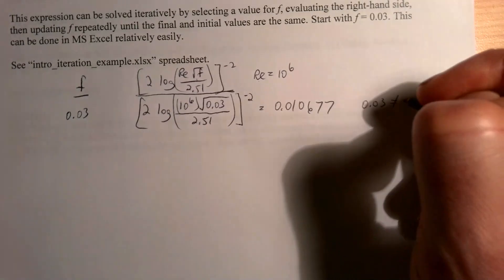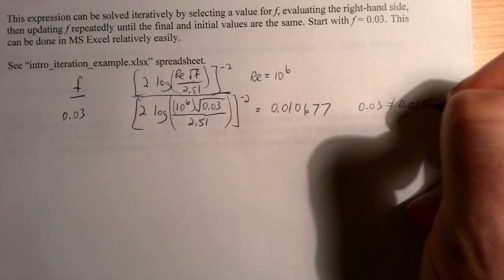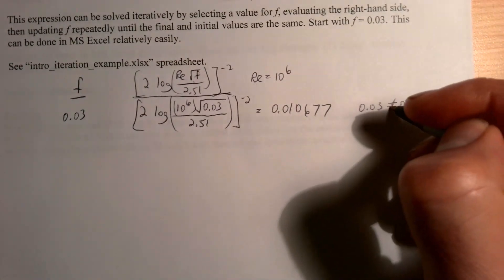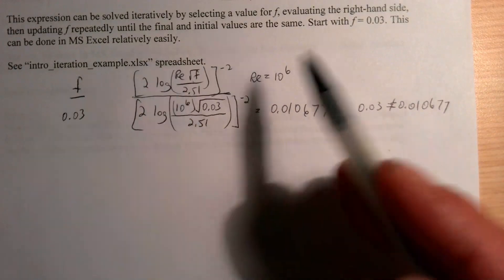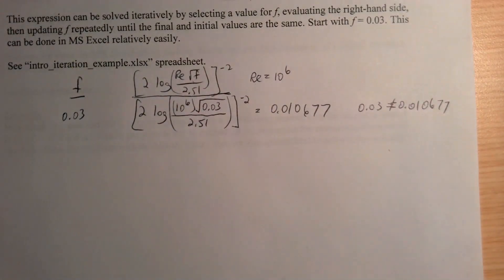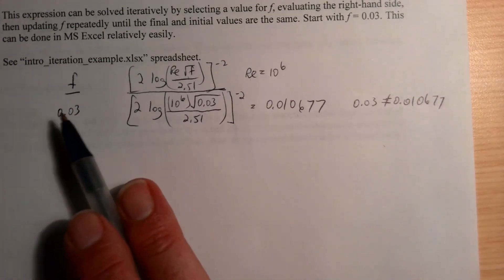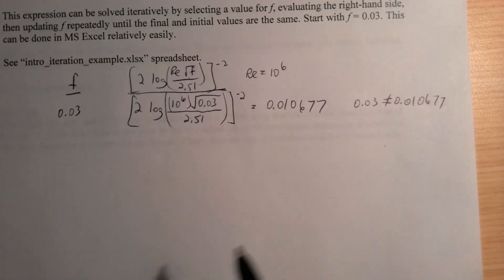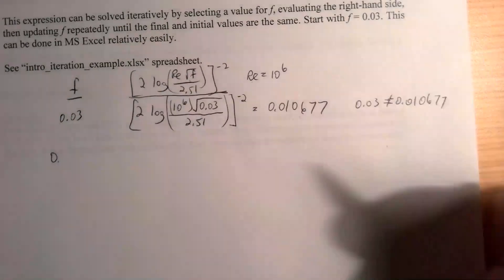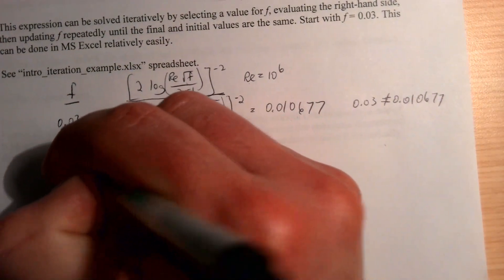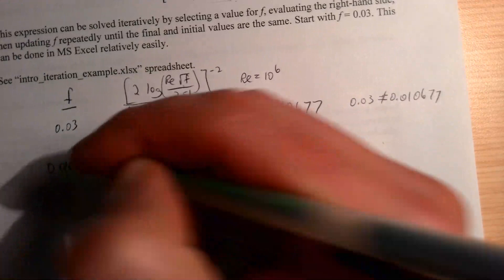So this is the value we got here, and clearly, you know, 0.03 is not equal to 0.010677—that means our guess was incorrect. So we could just make some other random guess here, but the idea, you want to be smart about how you guess, is to use the previous guess here as the starting point for the next one.